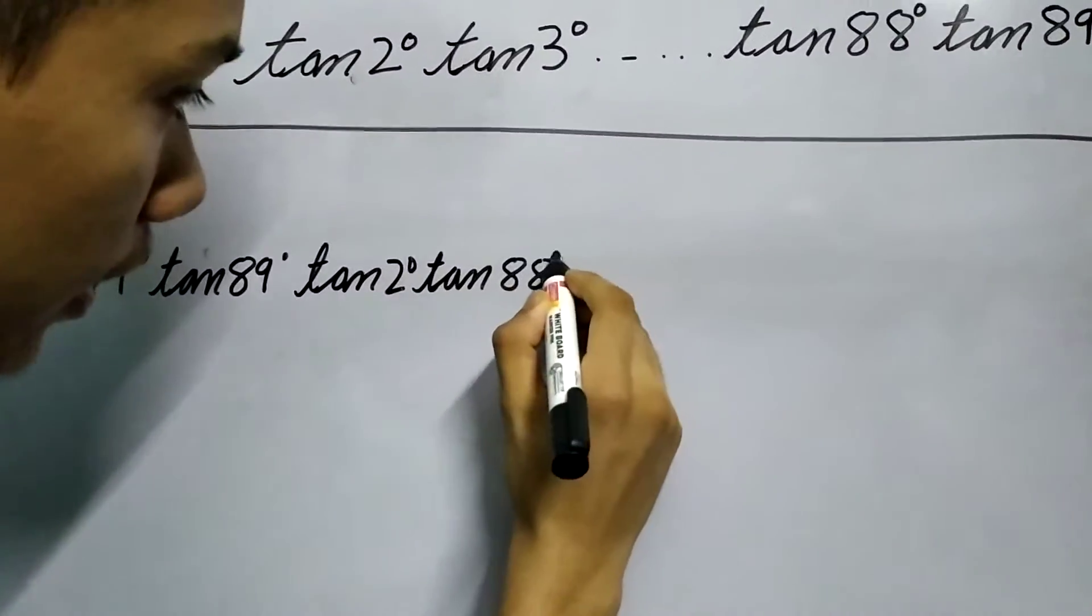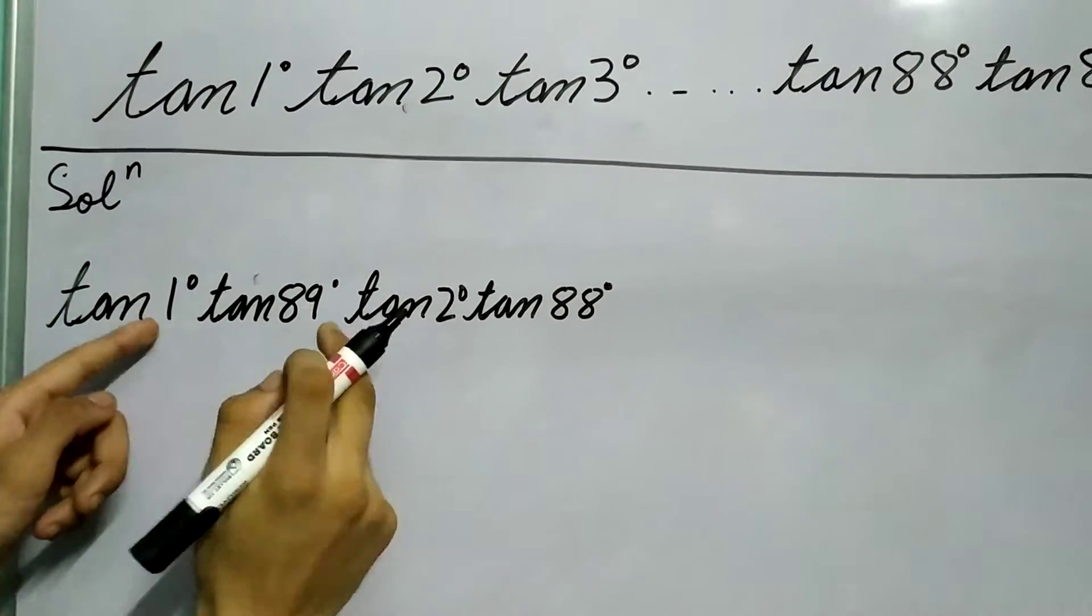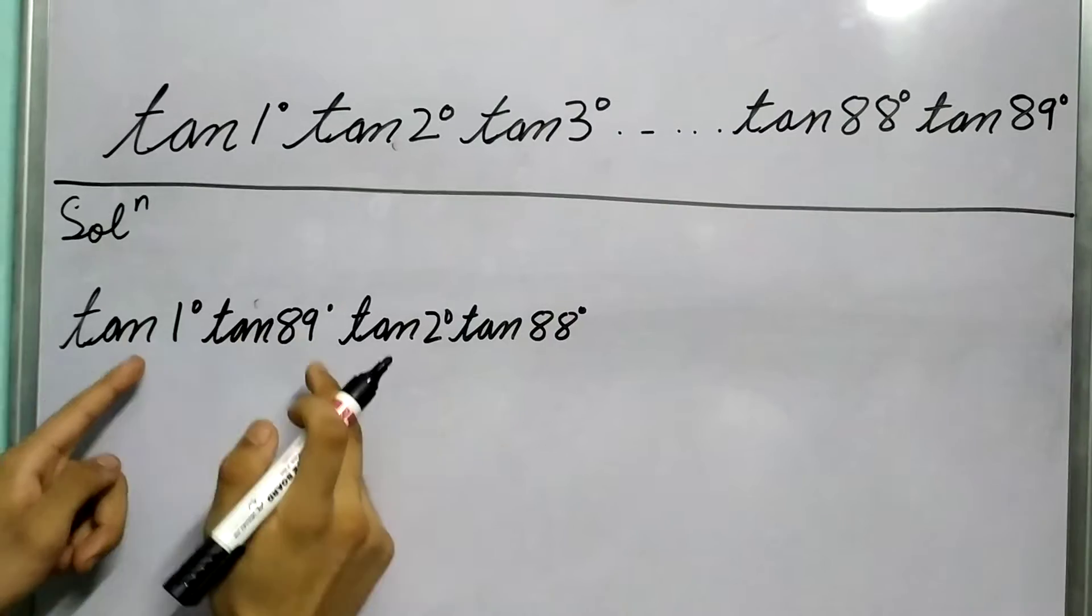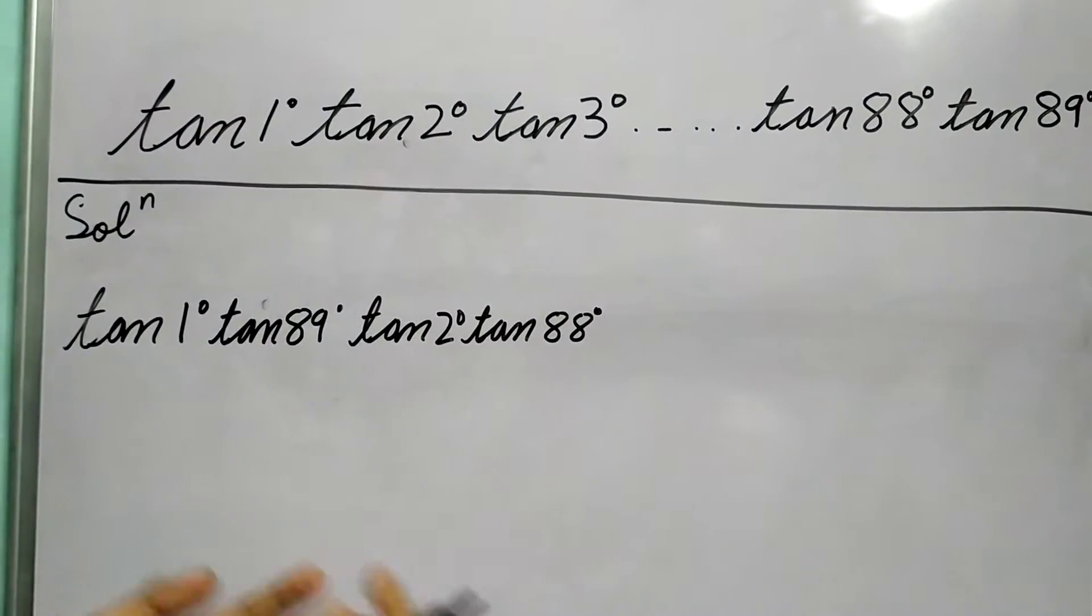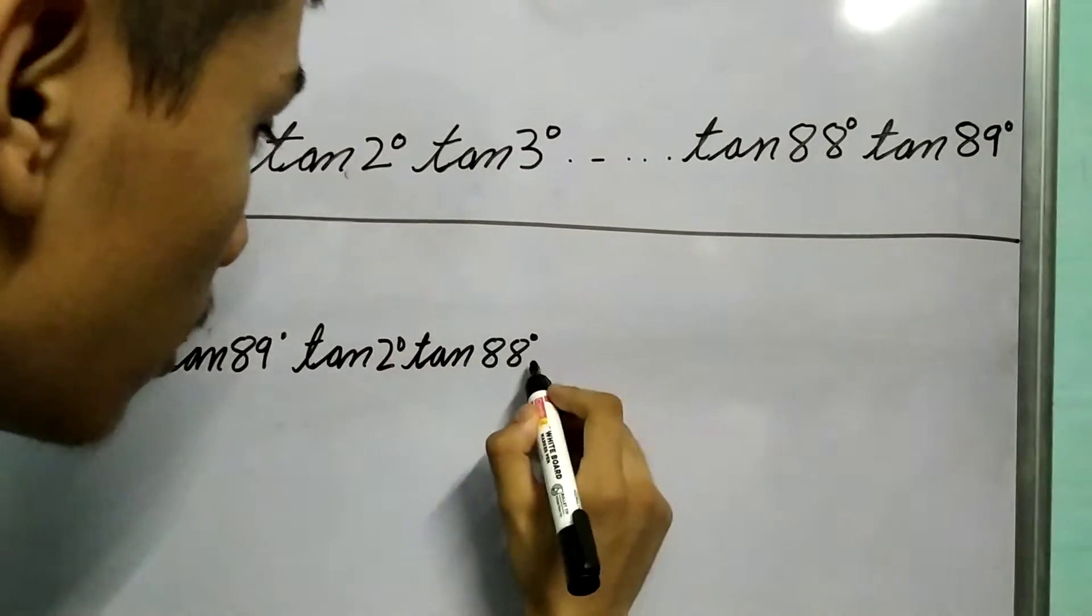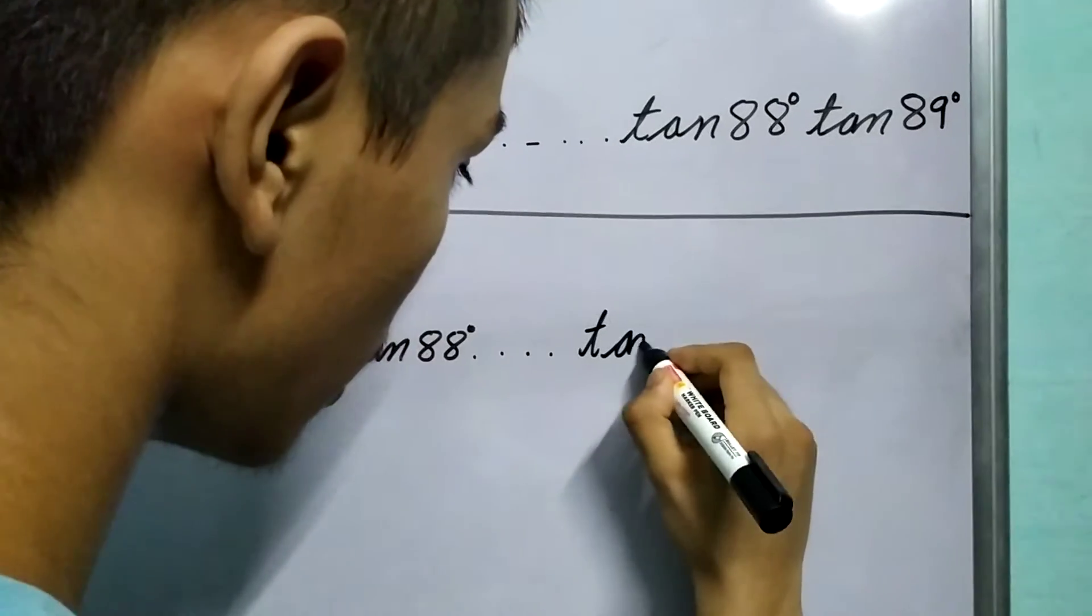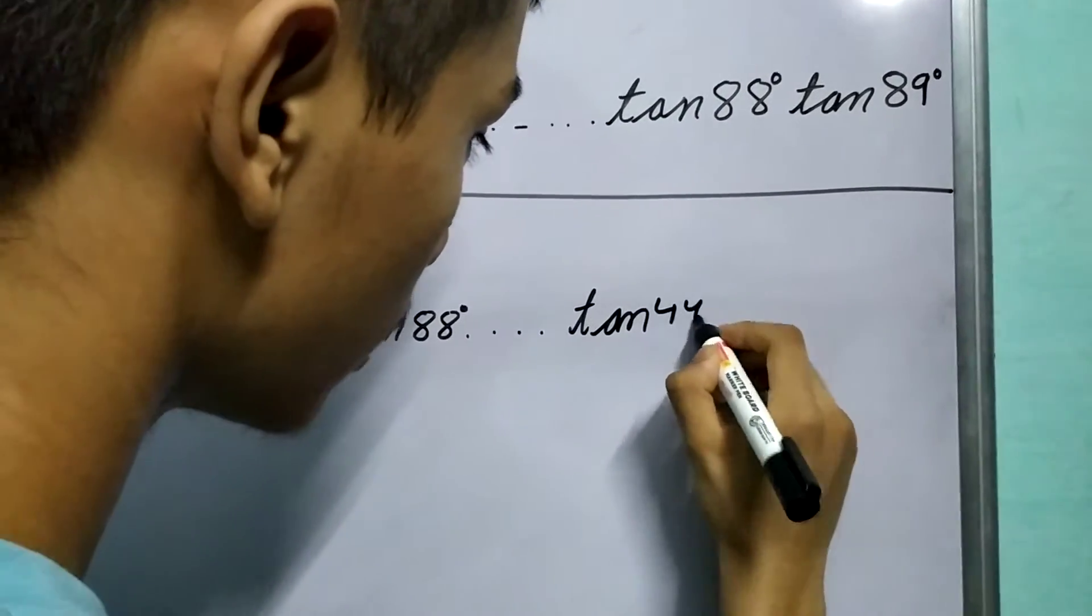You're getting the pattern, right? Our pairing gives us, if you sum the pairs, we are getting 90 degrees. Why? Just look at it. And so on until tan 44° pairs with tan 46°, right?